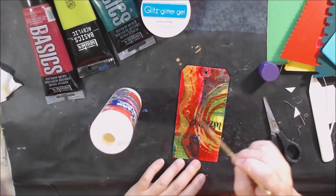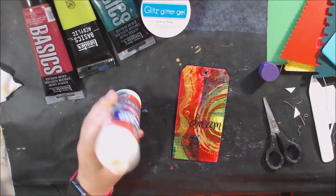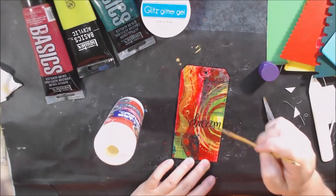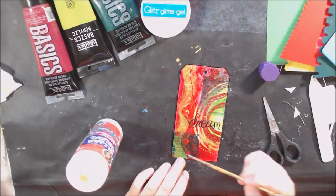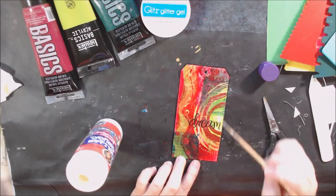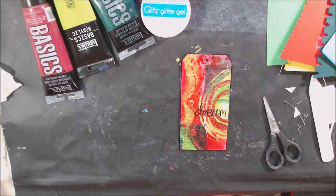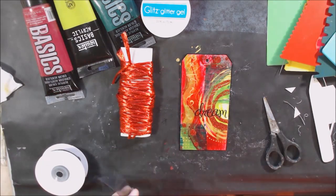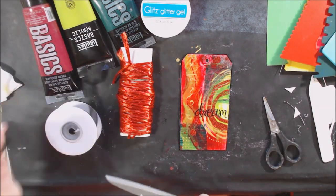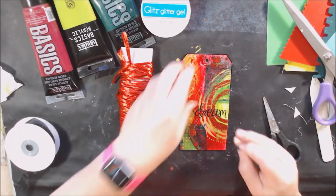The tag at the start had some white gesso on it so none of this stuff that I scraped onto it soaked into the card because it was already gessoed. Then I just threaded a couple of fibers through the top because I like to put them on my tags.